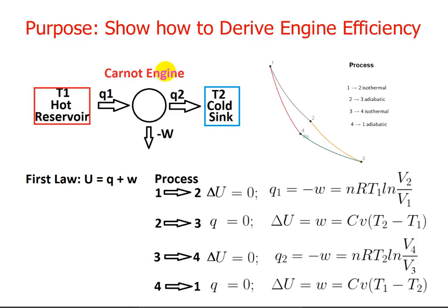The Carnot engine is represented schematically by this diagram showing a reservoir of heat with temperature T1. The heat Q1 is used to obtain some amount of work minus W, shown negative right here because it's flowing out of the system. The remaining heat Q2 is dumped to a cool reservoir at temperature T2.